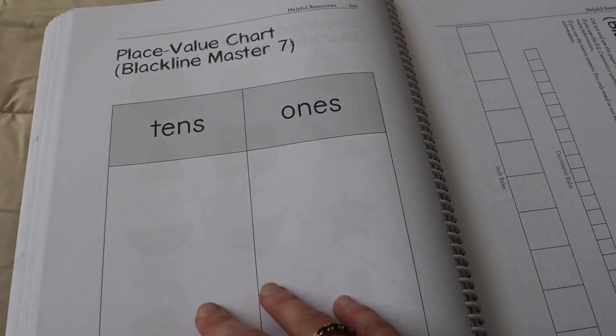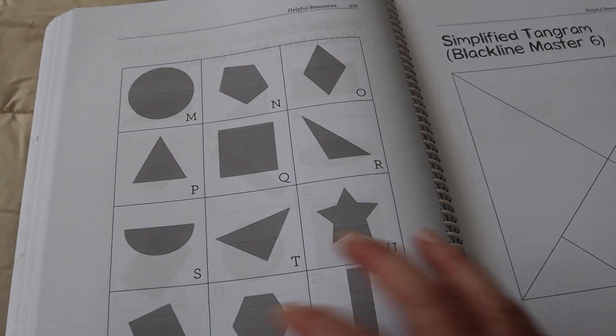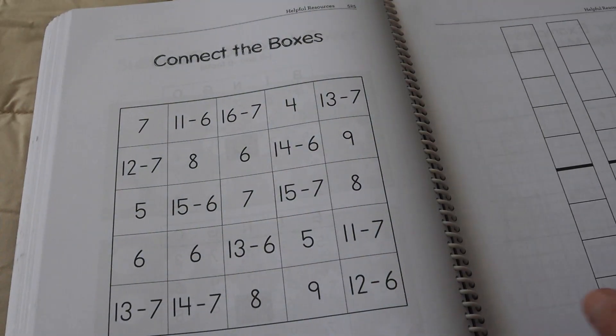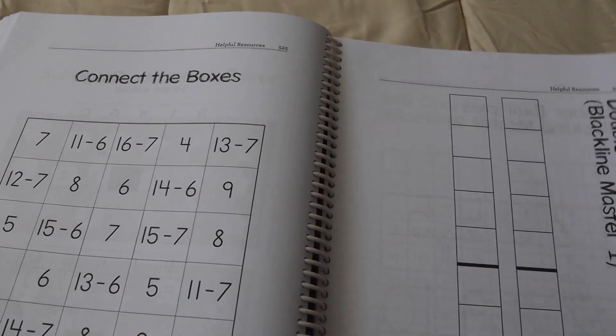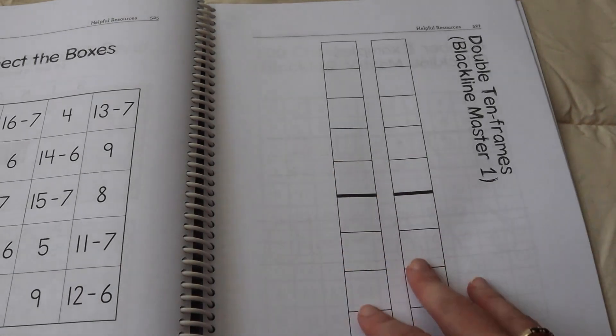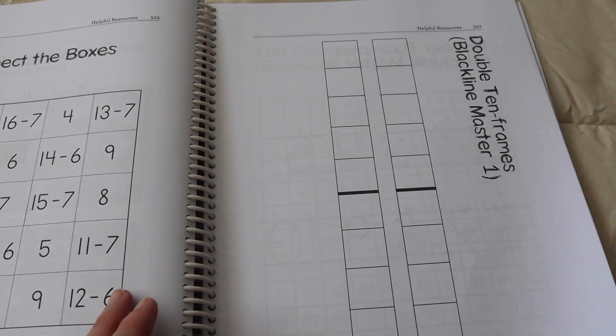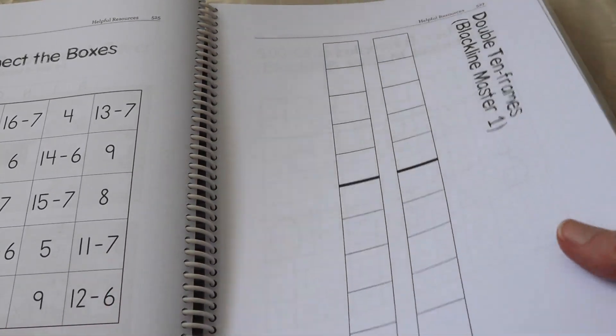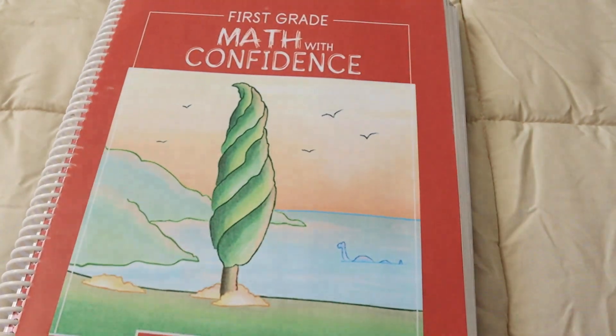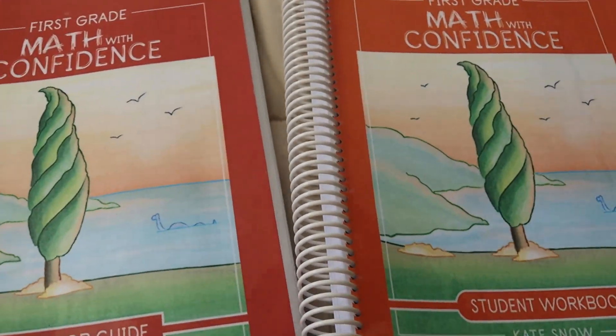You've got your place value chart and things like that. So these are also available on their website where you can download more than one. Like if you bought the physical copy of this and not the PDF, you can find the PDF for these resources if you need to print a new one. So that is a flip through of first grade math with confidence.